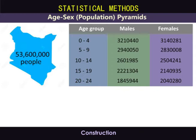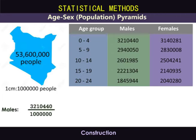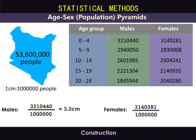We simply select a suitable scale to draw the bars. If we choose a scale of one centimeter to represent a million people, we can calculate the length of the bars for each gender in each age group. For example, for 0 to 4 years, the males: 3,210,440 divided by a million gives us 3.2 centimeters. For the females, 3,140,281 divided by a million gives us 2.8 centimeters.